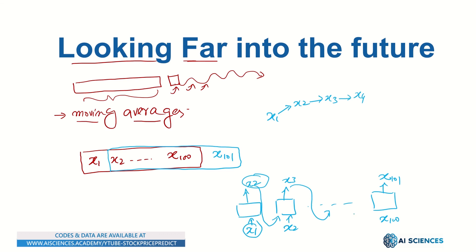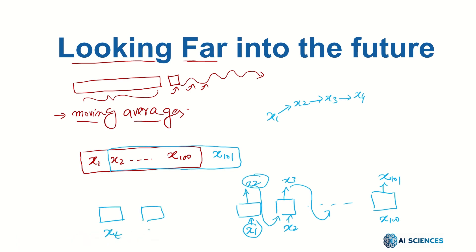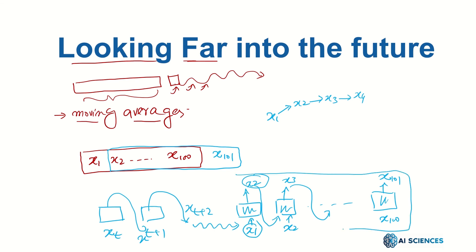Using this sequence-to-sequence approach, we can generate a model where at inference time we give xt, it generates xt+1, feed that back to generate xt+2, and so on — producing predictions very far into the future. This is the real power of recurrent neural networks for stock price prediction, where moving averages and simple models fail badly for long-term predictions.